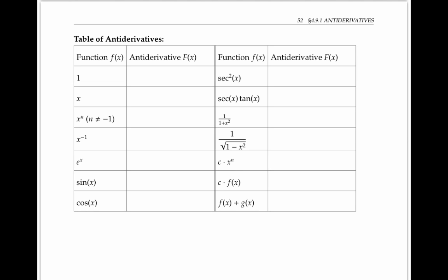If you know the derivatives for some standard functions, it's pretty easy to guess some antiderivatives. For example, the antiderivative of one is x, since the derivative of x is one. Adding a constant C gives the general antiderivative. The antiderivative of x is x squared over two, because when I take the derivative of x squared over two, the two that I pull down cancels with the two in the denominator, leaving me x. Again, I can make this a more general antiderivative by adding a constant C.